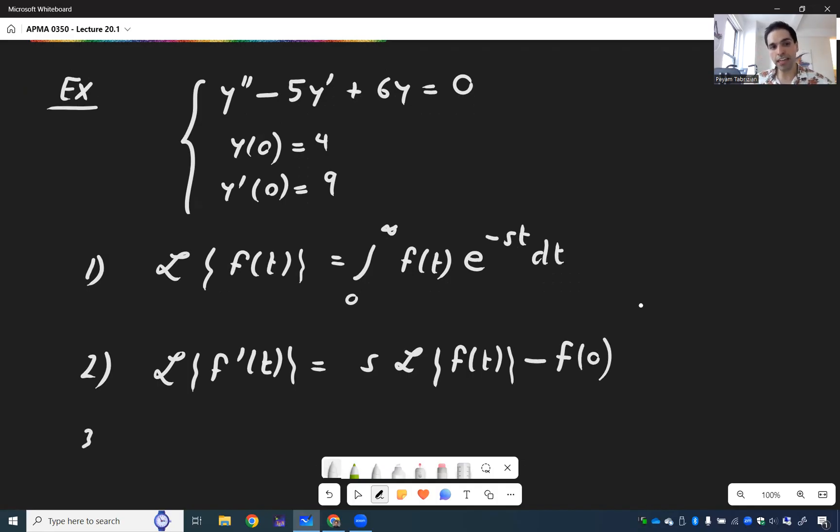And similarly for the second derivative, L of f double prime is s squared L of f minus s f of 0 minus f prime of 0. And once again, all those formulas will be given to you.